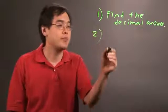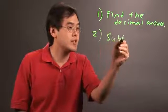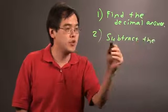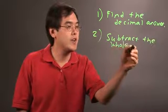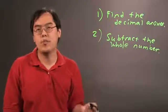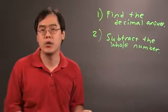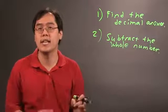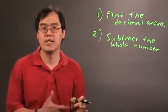The second step is subtract the whole number. Just about every division problem will have some kind of whole number. So just subtract out the whole number and leave the decimal portion of it as is.